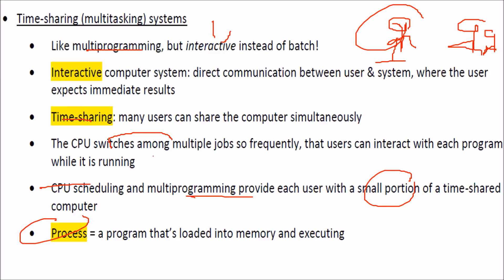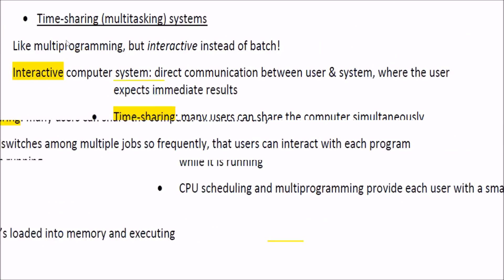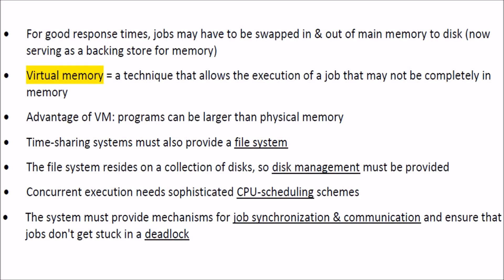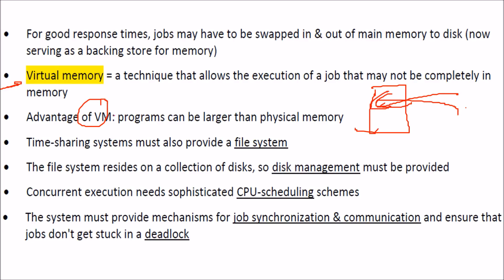A process is a program under execution — a program loaded into memory that is executing. For good responses, we need swapping in and swapping out. Virtual memory is a concept that allows large programs to run even when main memory is small, by bringing in only the needed portions. Time-sharing systems must also provide a file system residing on disk, requiring disk management, CPU scheduling, job synchronization, communication, and deadlock prevention. This has been an introduction to what we will cover in later discussions, following the Silberschatz-Galvin Operating Systems book.